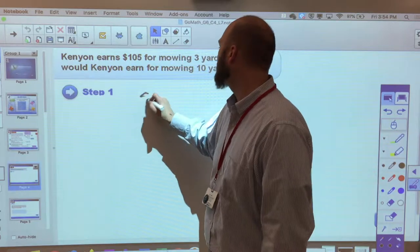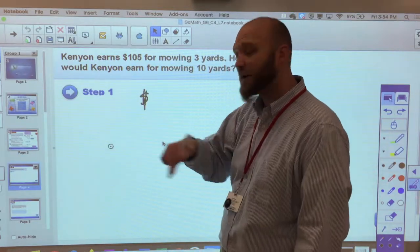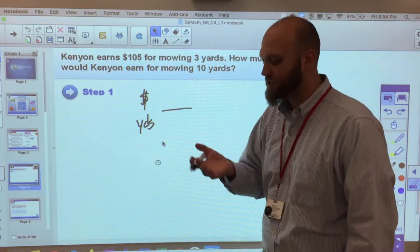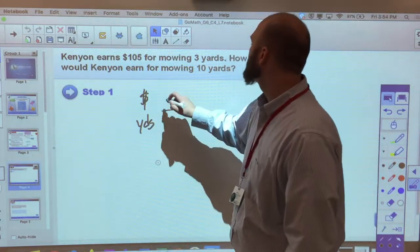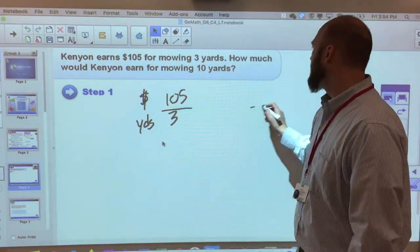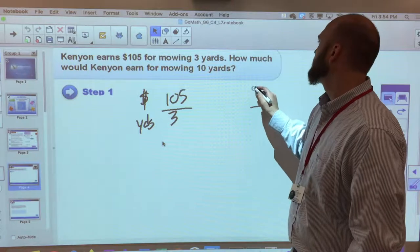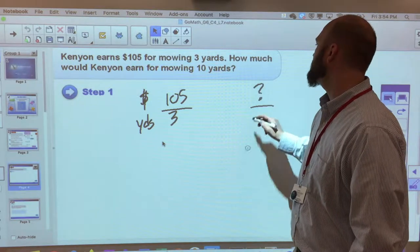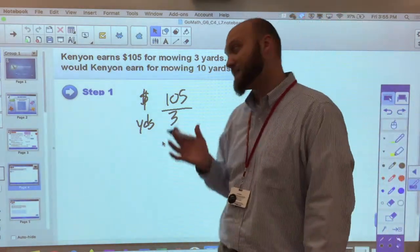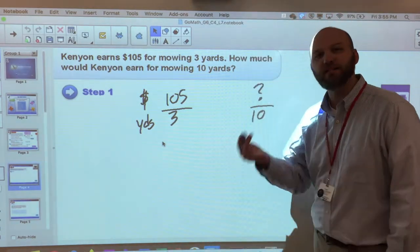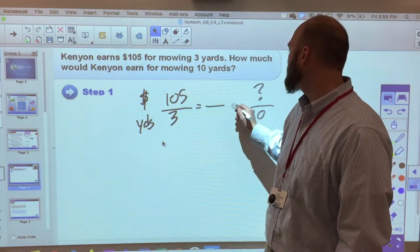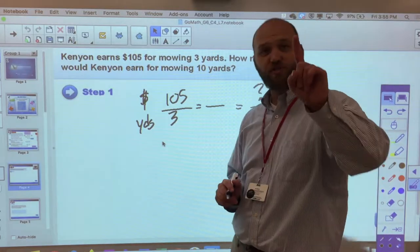So how can I solve a problem like this when the number of yards or my equivalent isn't very useful. I can take my $105 of two things I'm comparing dollars and yards. So he makes $105 for three yards. And I want to know how much he makes, that's the money in question, for ten yards. Again I have nothing that I can easily multiply three by to get ten. Yes, three and a third but that's not really gonna do well for me.